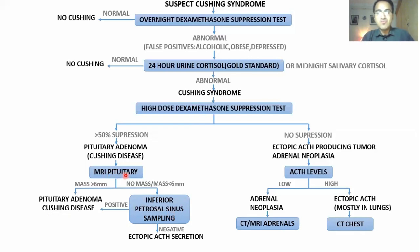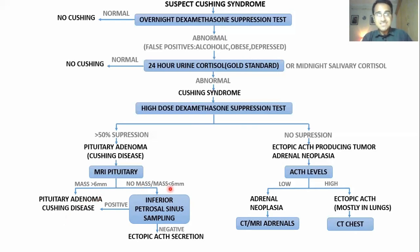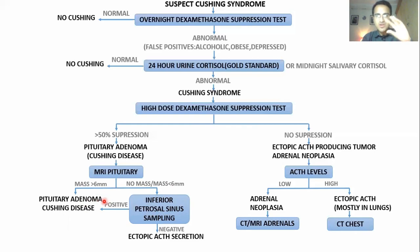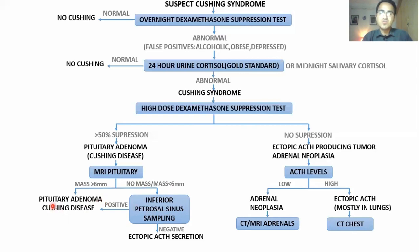In summary for MRI pituitary workup: if you find a mass greater than 6 mm, it is a pituitary adenoma secreting ACTH. If no mass or an insignificant mass is found, you take a blood sample from the inferior petrosal sinus and check ACTH level. If ACTH is found there, it is a brain source — still Cushing's disease. If negative, it is ectopic ACTH secretion — Cushing syndrome.